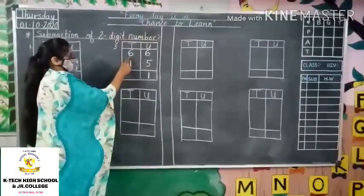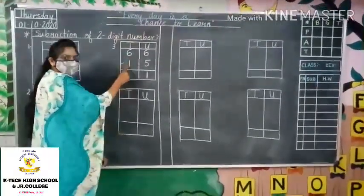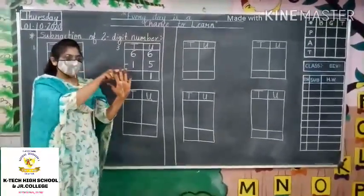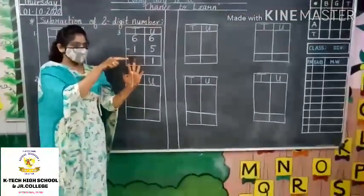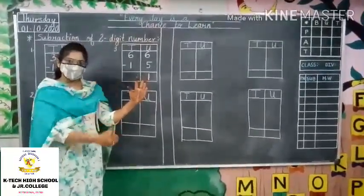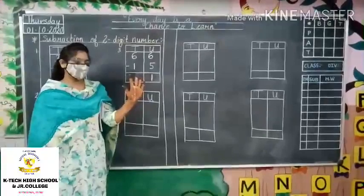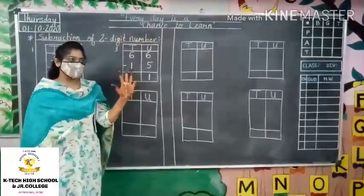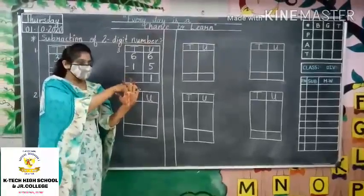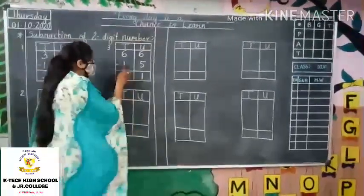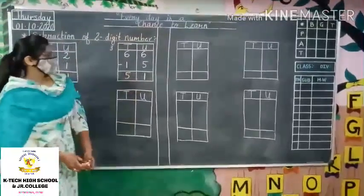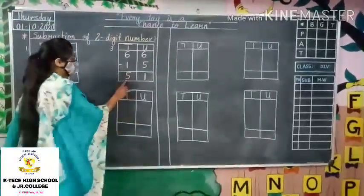Now for tens: 6 minus 1. Put 6 fingers — 1, 2, 3, 4, 5 and 6. Remove 1 finger from the front. How many fingers are remaining? 1, 2, 3, 4 and 5. So the answer is 5. That is 51.